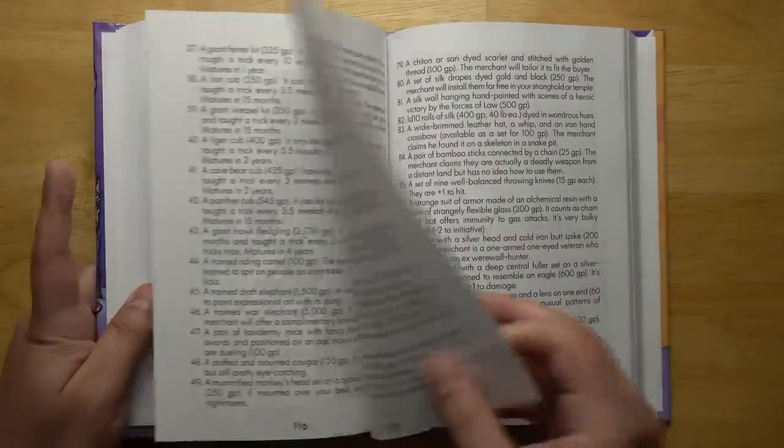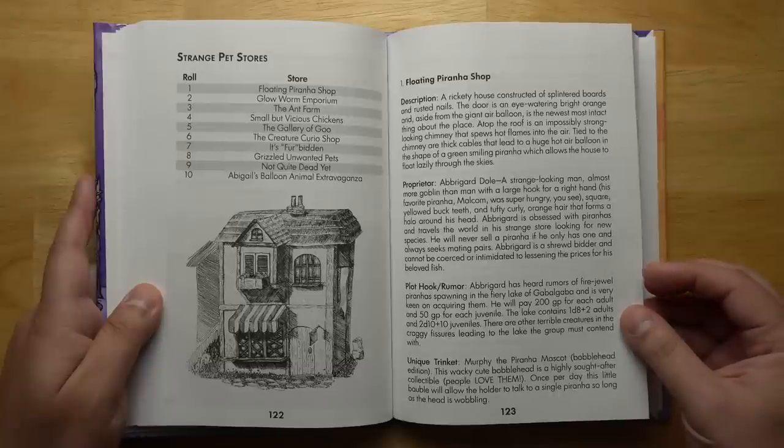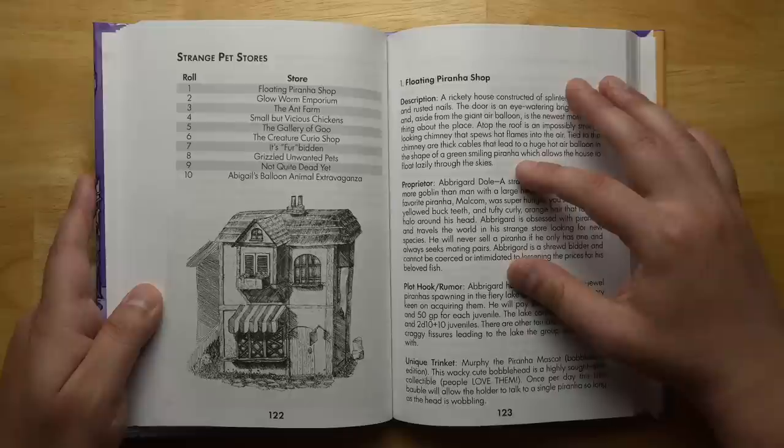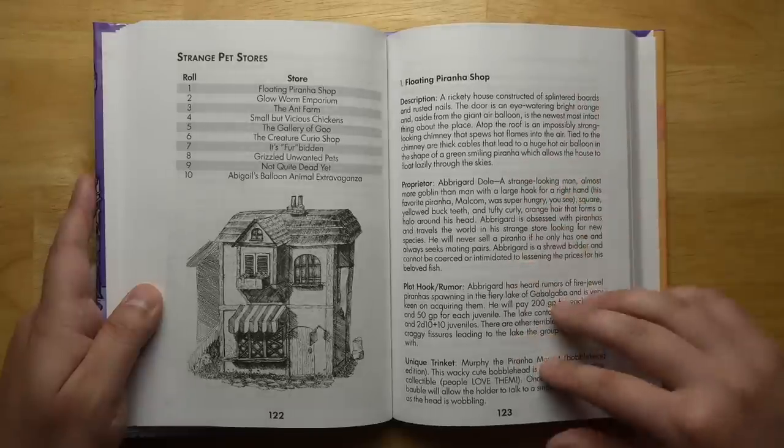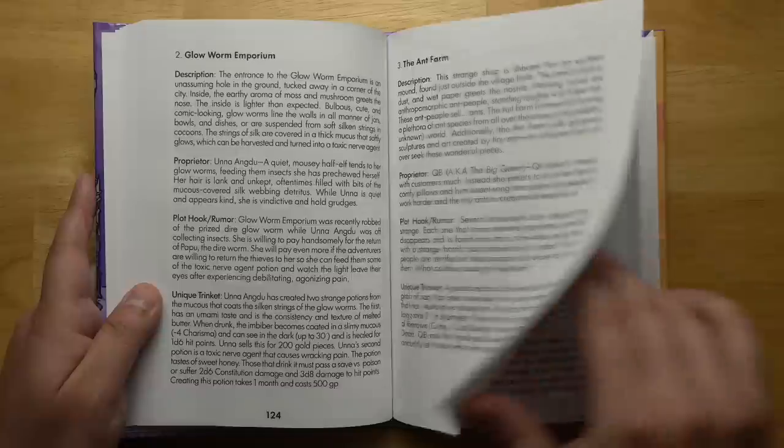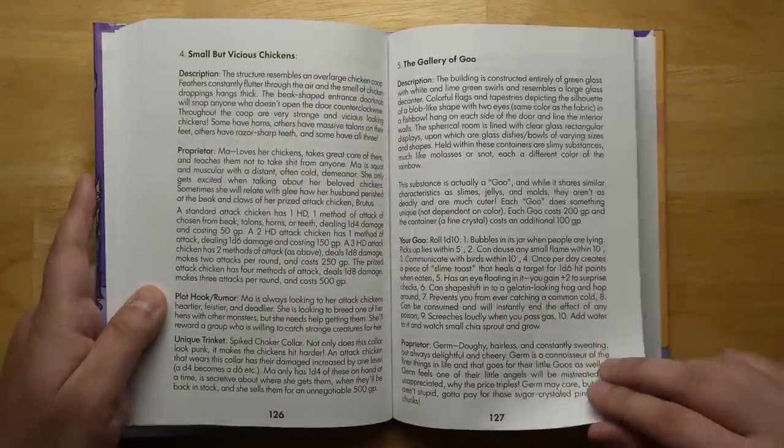There's like D100 tables for everything here. A list of 10 strange pet stores, because yes, you can acquire your own pets. For example, the floating piranha shop. Each of these has a description, the proprietor, the plot hook and a rumor attached to it, a unique trinket. The glowworm emporium, the ant farm, the gallery of goo, small but vicious chickens - that's a Warhammer reference right there.